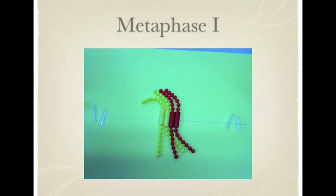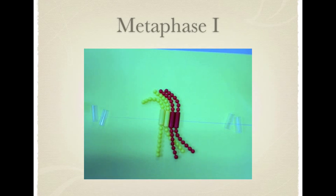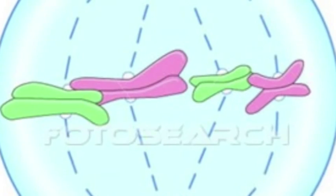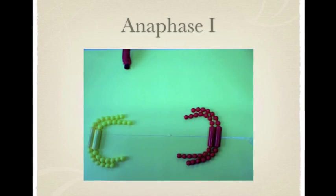Anaphase 1 starts with a breakdown of proteins holding sister chromatid cohesion, and the two chromatids separate by going to opposite poles guided by the spindle.